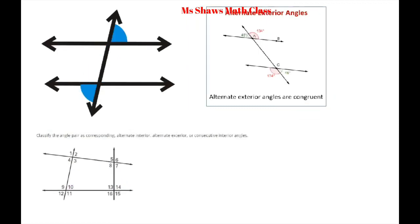Alternate exterior angles are kind of the same thing but on the outside — on the exterior. They are also congruent. In our case, the alternate exterior angle pairs are 2 and 12, 6 and 16, 1 and 11, and 5 and 15.